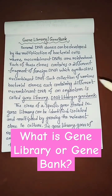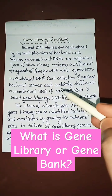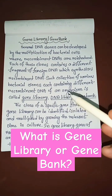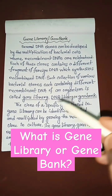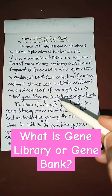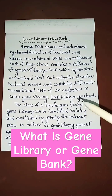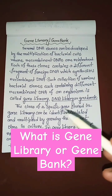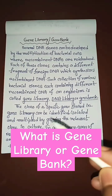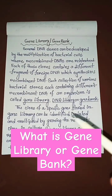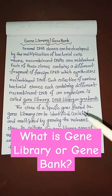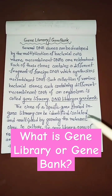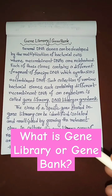Such a collection of various bacterial clones, each containing different recombinant DNA of an organism, is called a gene library, DNA library, or gene bank. The clone of a specific gene stored in a gene library can be identified, isolated, and multiplied by growing the relevant clone in culture.